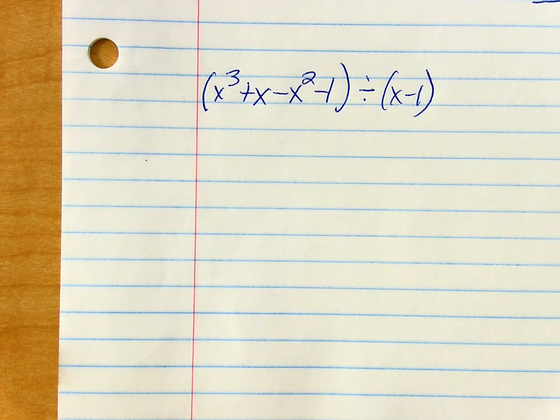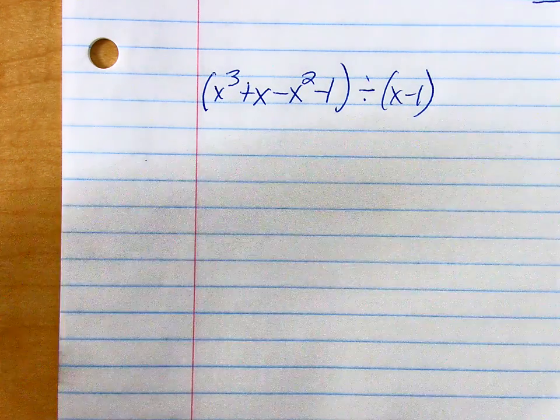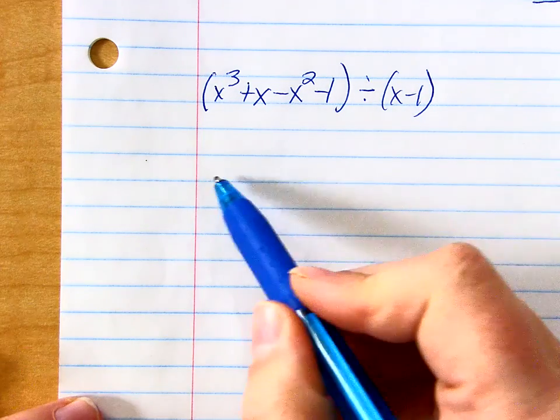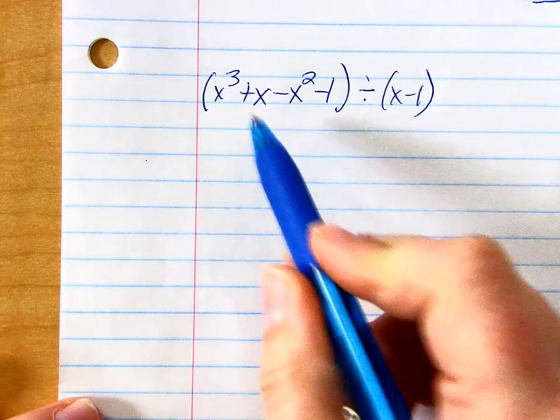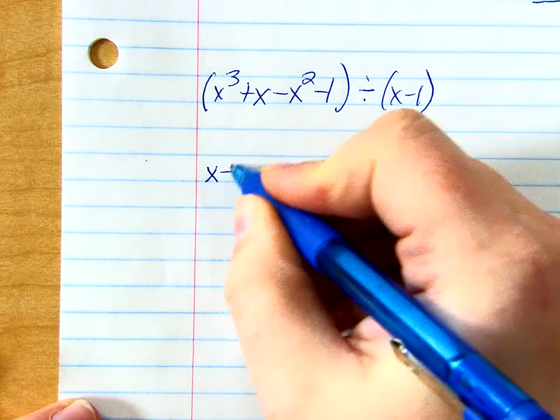So now we're going to do another example of using long division to divide two polynomials. First thing I want to do is rewrite it with the divisor bar. Who's going to go out in front if it's written this way? Yeah, it's x minus 1. Whatever I'm dividing by comes out in front, so x minus 1.